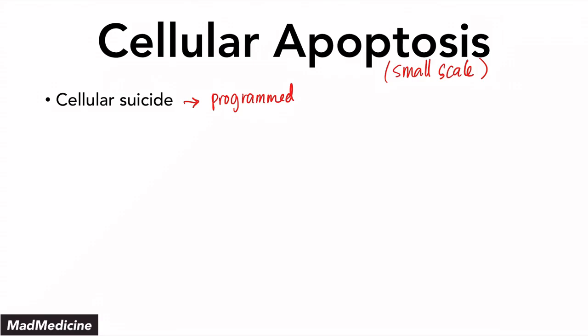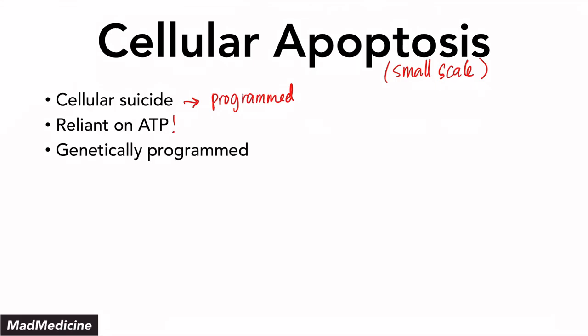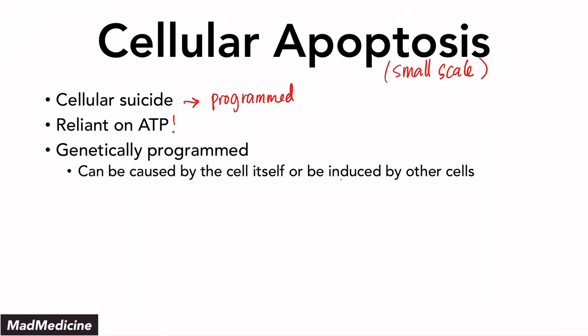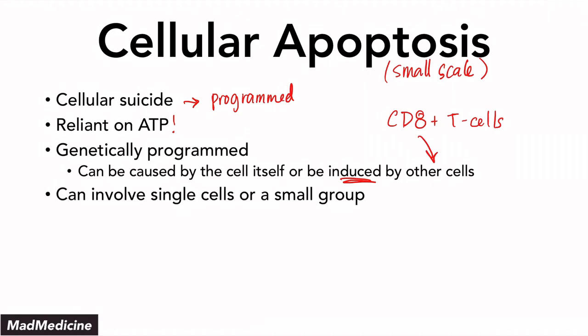One thing to remember is that cellular apoptosis is actually reliant on ATP — you need ATP to kill off your cells from the cellular apoptotic standpoint. Cellular apoptosis is genetically programmed cell death. This programming can happen by the cell itself, or it can be induced by other cells. For example, cytotoxic CD8-positive T cells can kill off other cells by causing them to go through apoptosis by activating pro-apoptotic genes. Apoptosis can happen at a single cell level or a small group of cells, but not at a mass cell level — at a mass level, you go through cellular necrosis, not apoptosis.